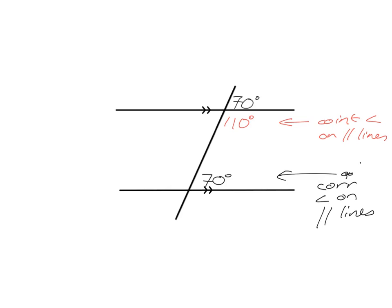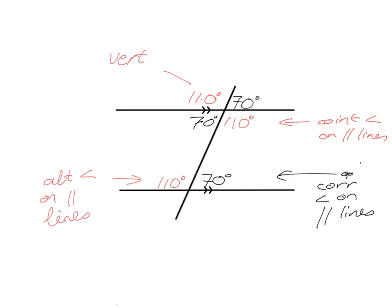Following up with that idea, from there to there I can just use vertically opposite: 110 and 110 are vertically opposite, and 70 will also be 70 because of vertically opposite. Let's go back to using some of my parallel line stuff. Can you see my back-to-front Z here? My back-to-front Z will help me get that this is 110, using alternate angles on parallel lines. And just while filling in all my reasoning, this was vertically opposite, and this one I also just used vertically opposite.